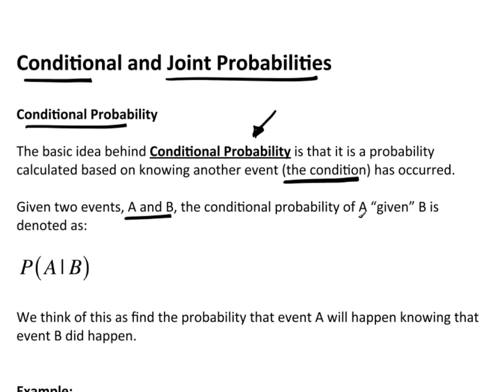The conditional probability of A given B, this means that A, knowing that B happened, is denoted as probability of A, a vertical line B. This vertical line we read as being given. So this is saying that we know B happened.